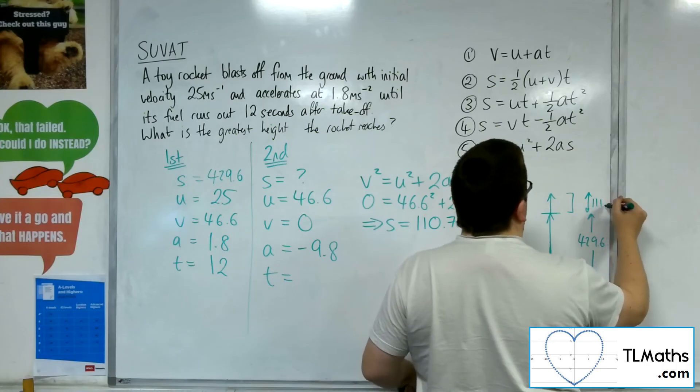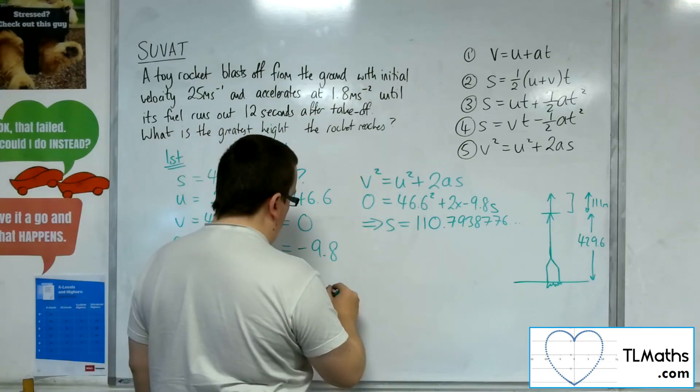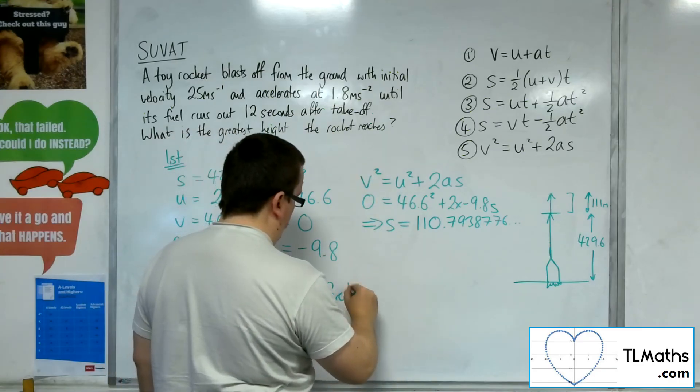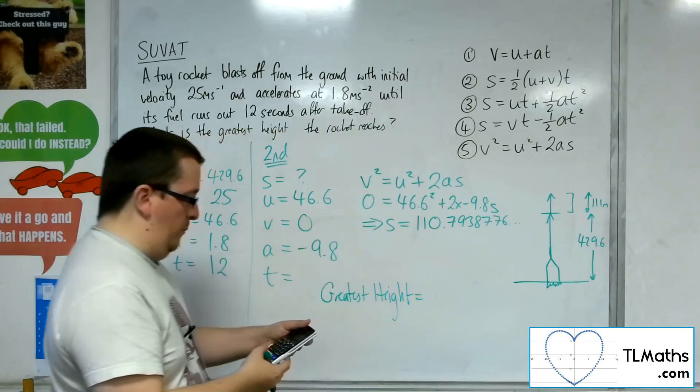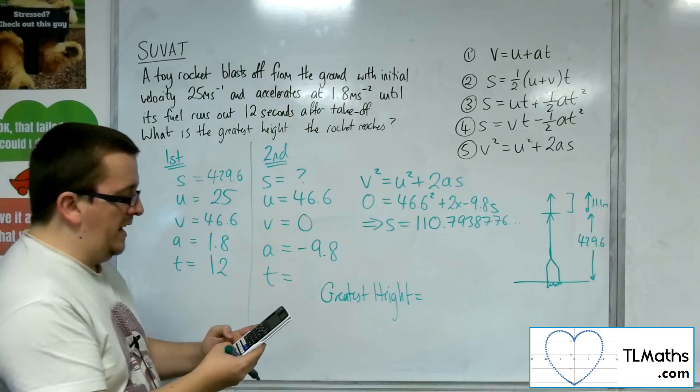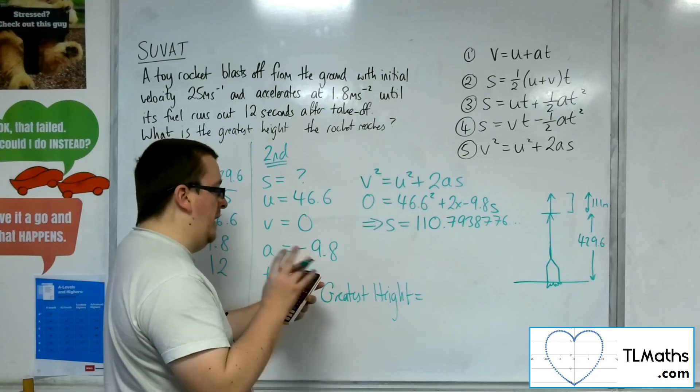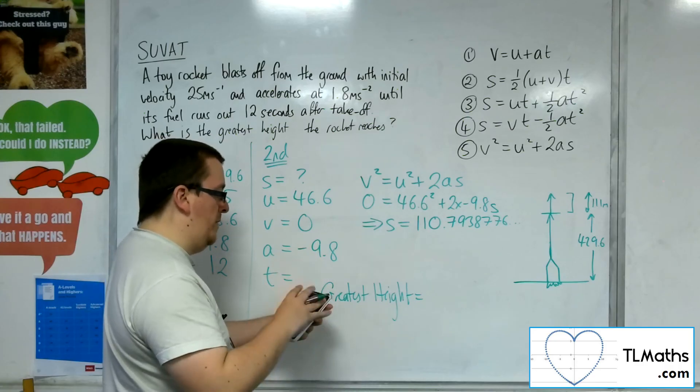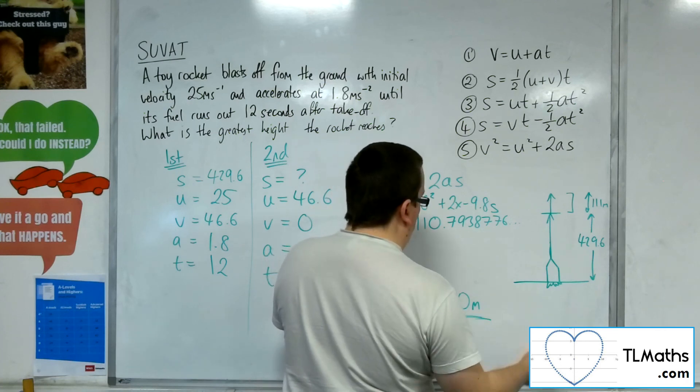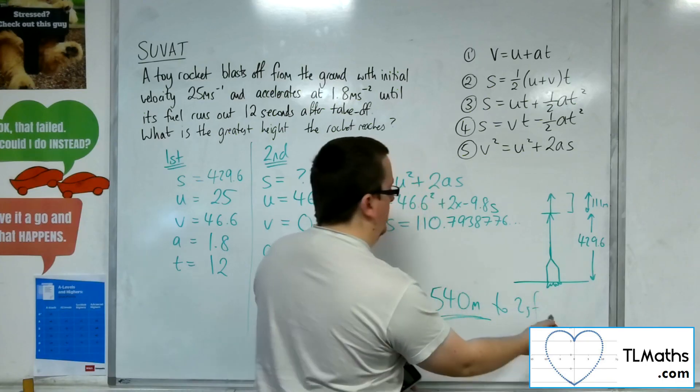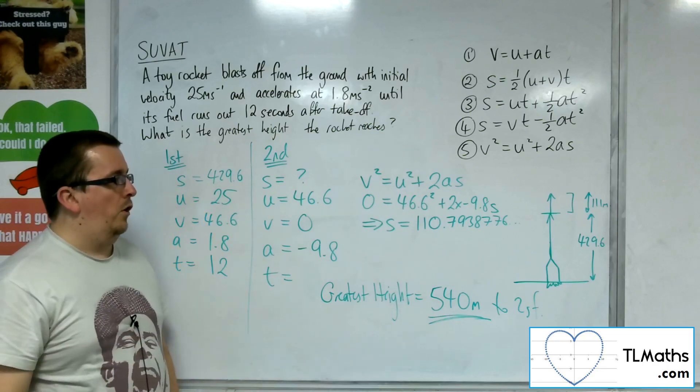So about 111 metres. So in total, the greatest height is the 429.6 plus the 110.79, which gets me to 540.3938776. So 540 metres to 2 sig fig. And that's how we can figure out the greatest height of the rocket.